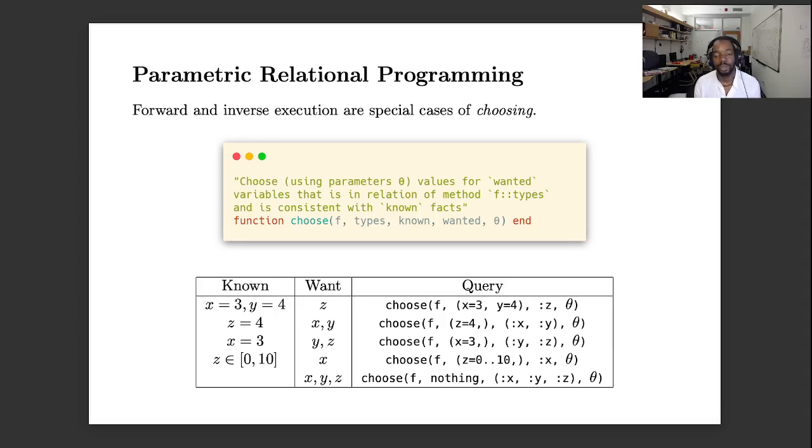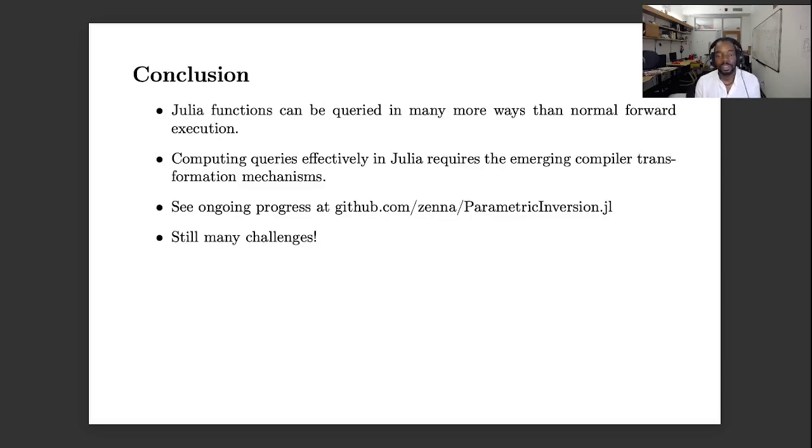So with that I will conclude by saying that Julia functions can be queried in many more ways than the normal forward execution. Computing queries in Julia effectively requires doing these kind of compiler transformations, which is also at the core of things like automatic differentiation. There's ongoing progress on my GitHub but it's still very experimental and there are still many challenges, but it's extremely fun and exciting and interesting problem to work on. Thank you.